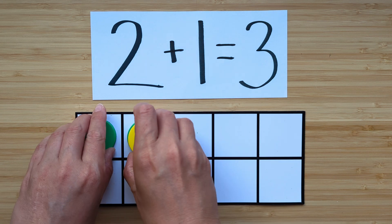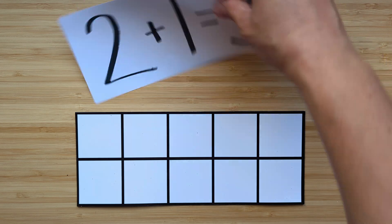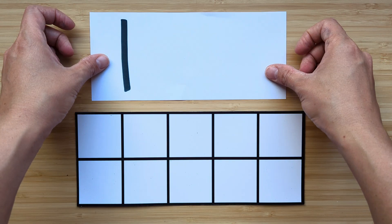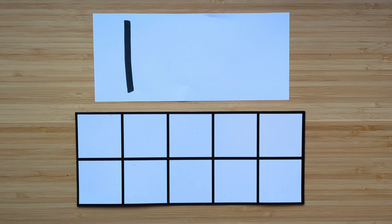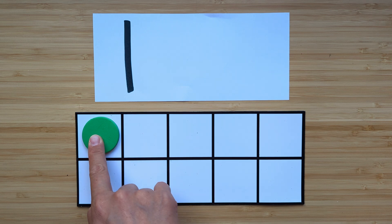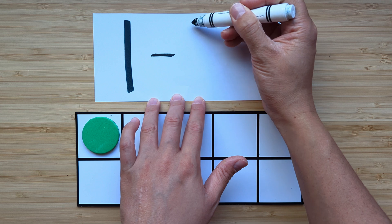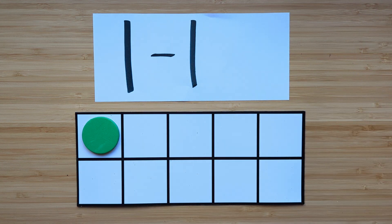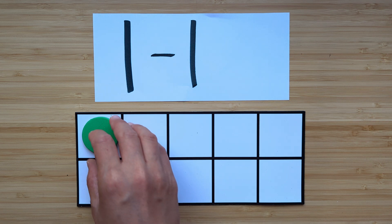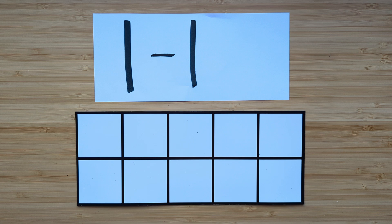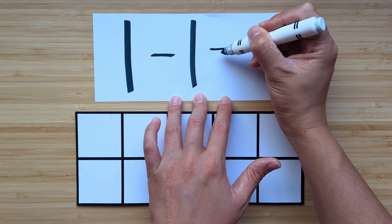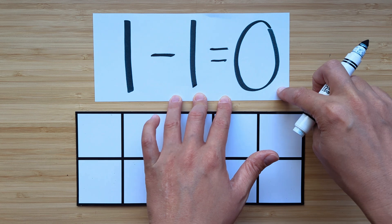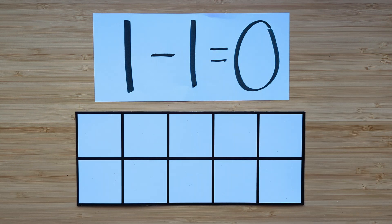Nice job. Clear off your boards. Let's try the last one. Make the number one. Point and count. One. What's one less than one? One less than one is zero. We have nothing left. Good job. We're all done.